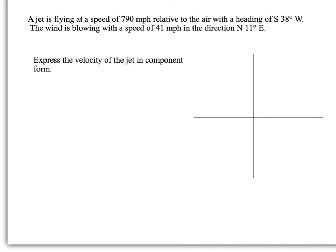Our first goal is to express the velocity of the jet in component form. We know that to write this we need the speed 790 times cosine of theta and 790 sine theta. So we must figure out our theta.